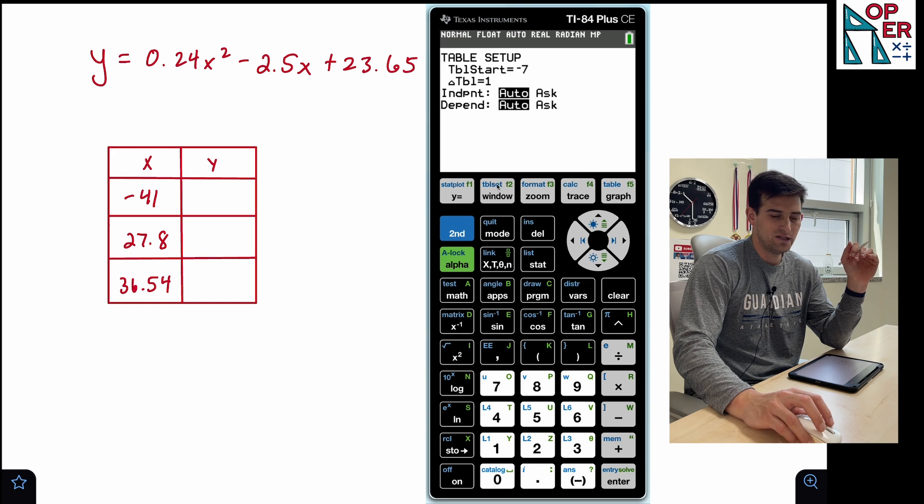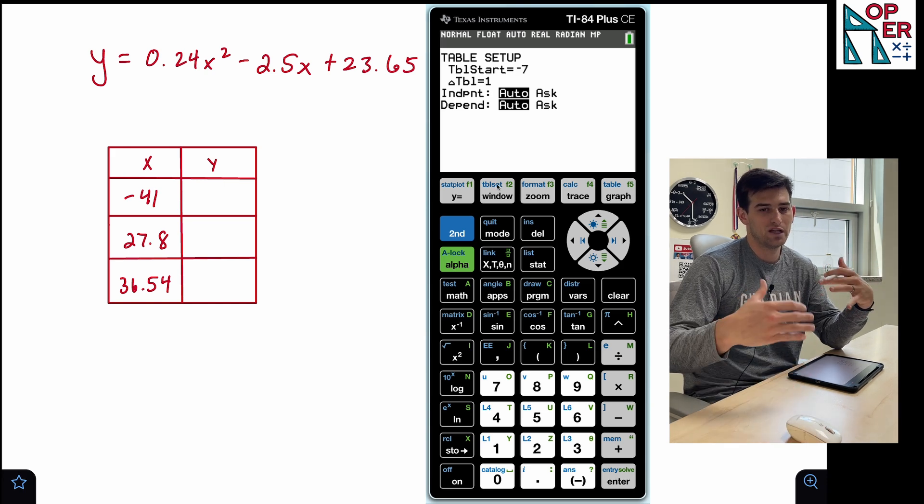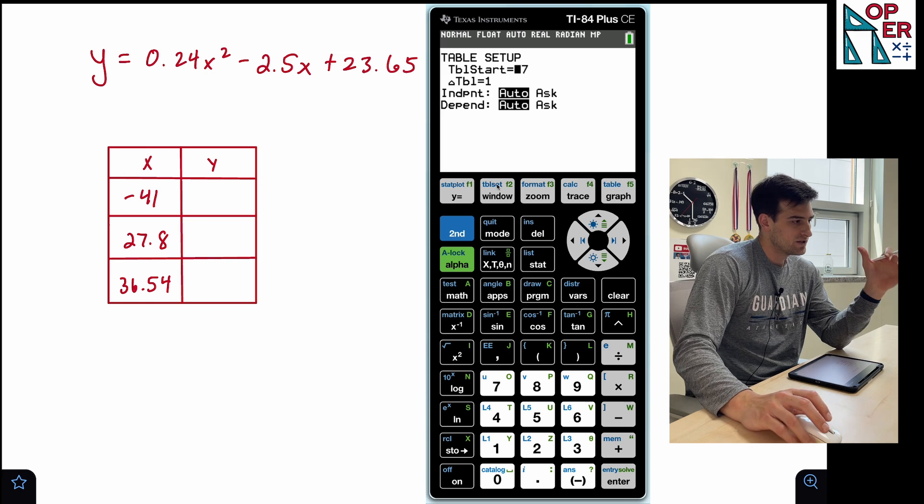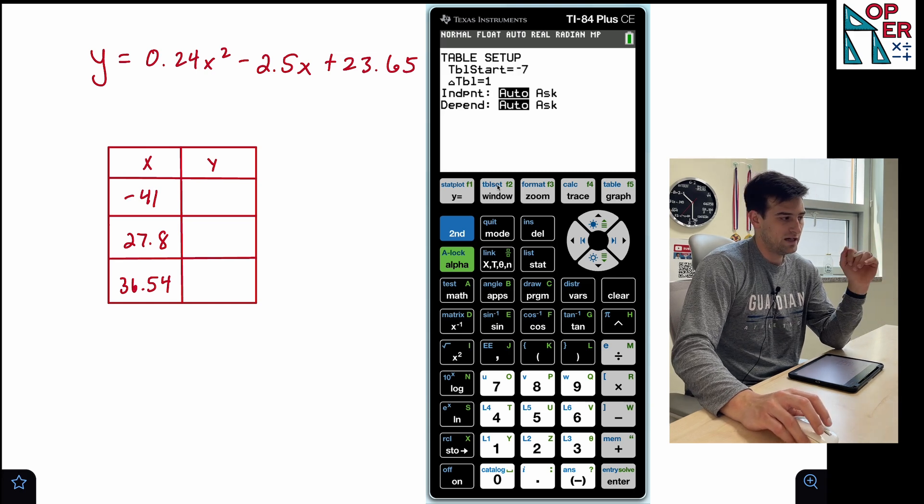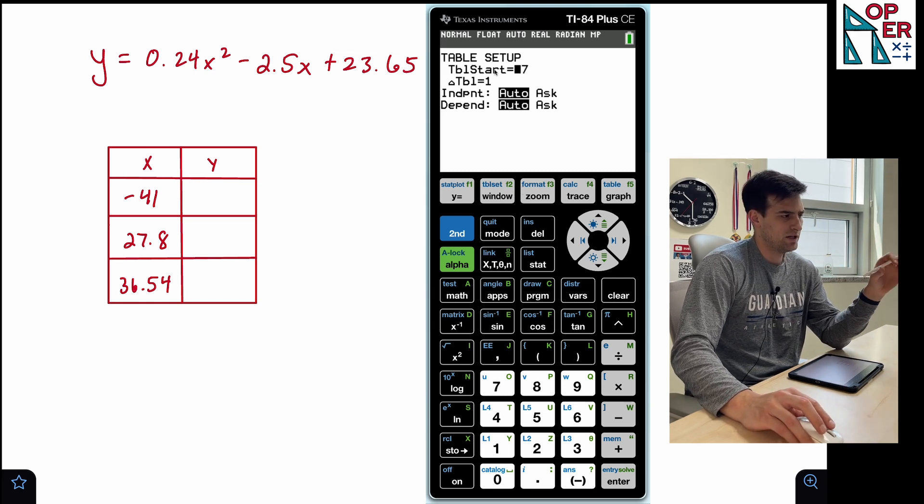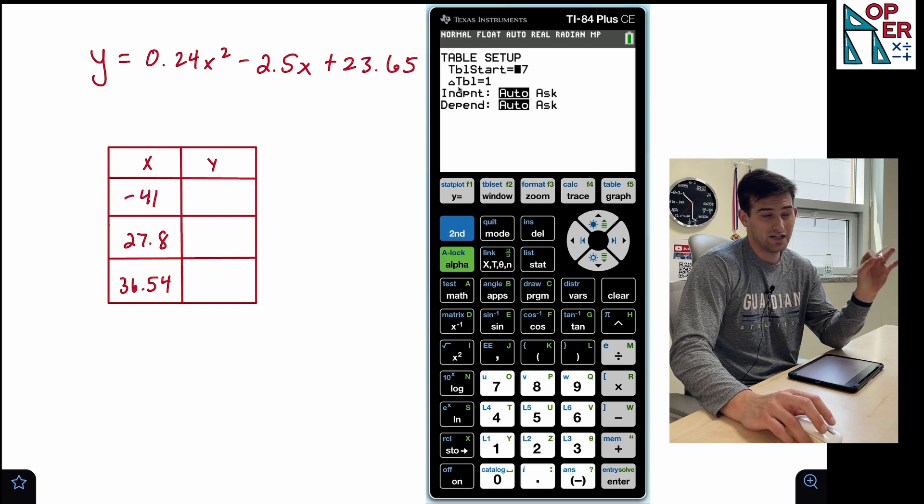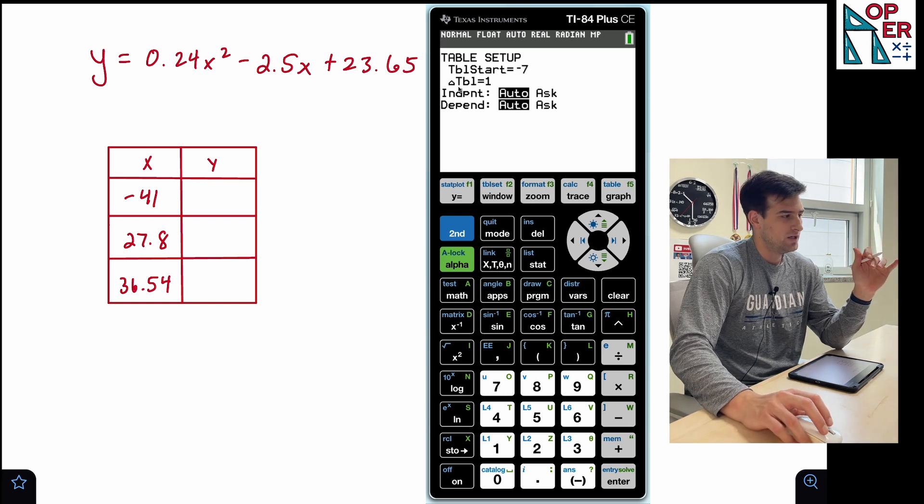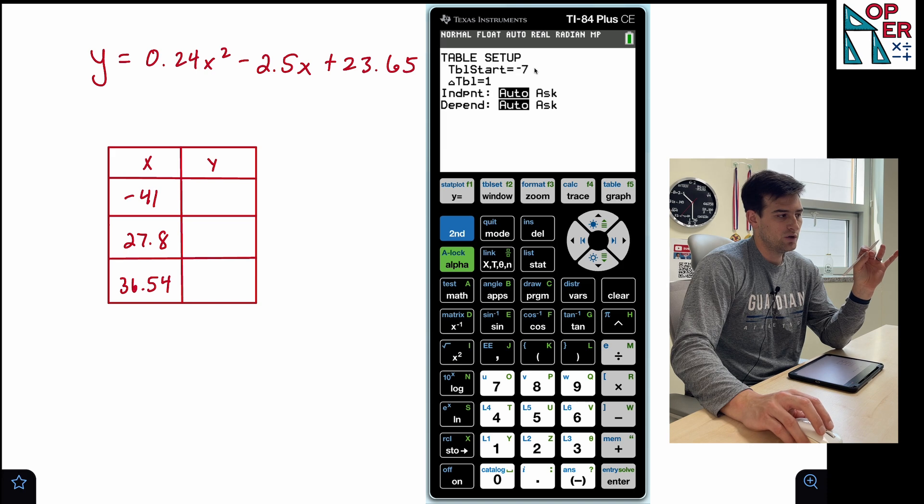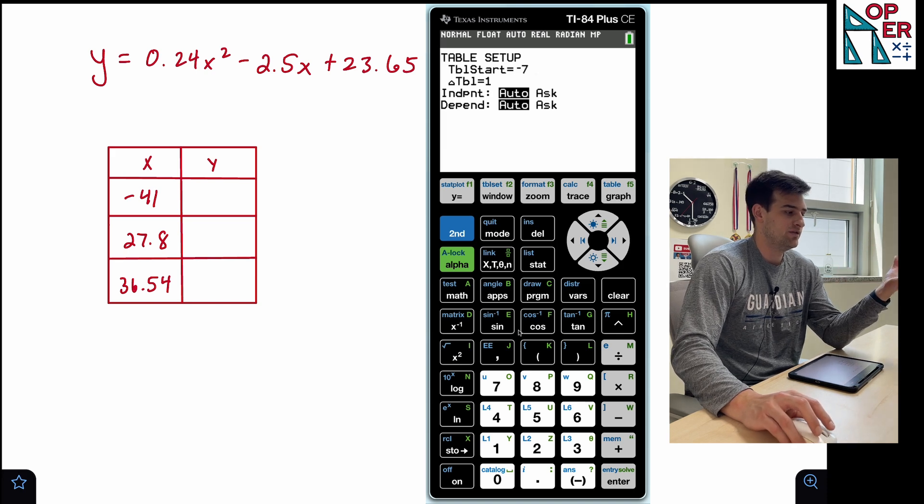And so above that, we see the letters TBL set. So that's table set. Basically, how do you want your table to be set up? So on this screen, in that other video that I talked about that I made, all I talked about was table start and delta table or change in table. And so the table start is where you want your table to start. What x value do you wanna see first?